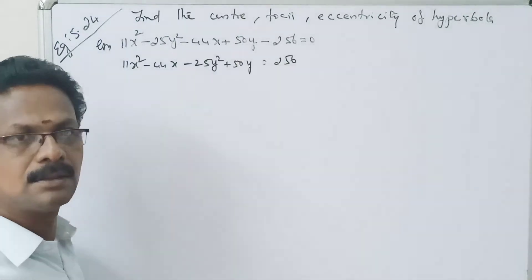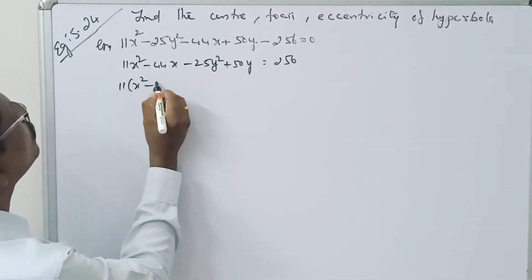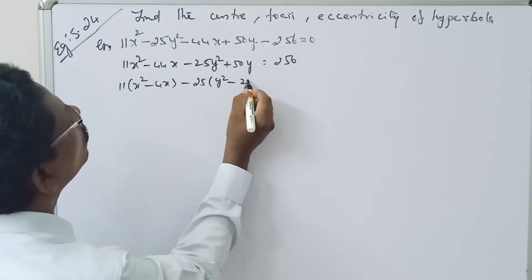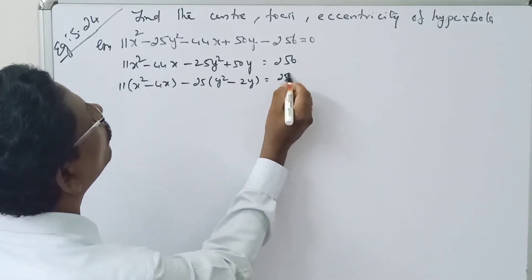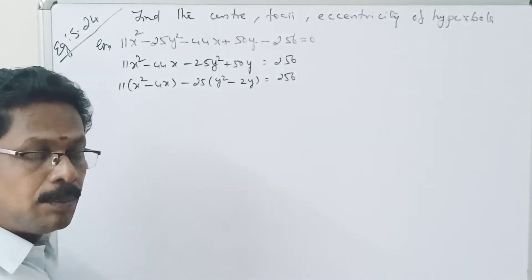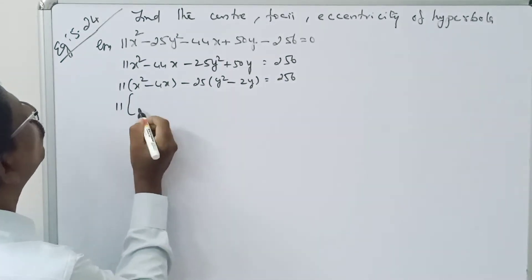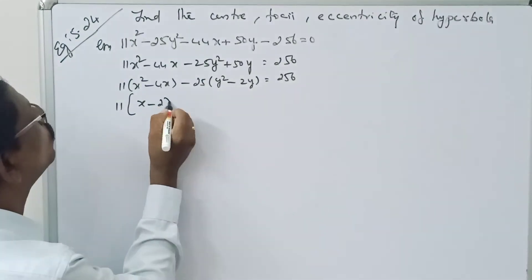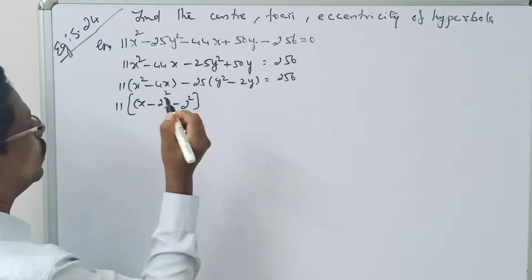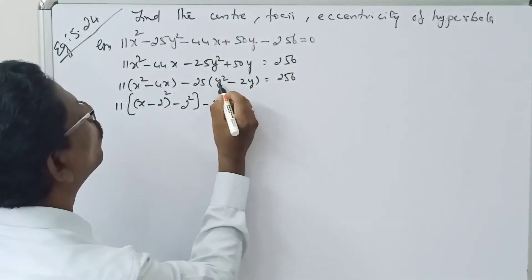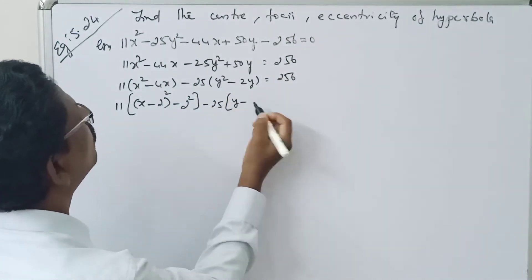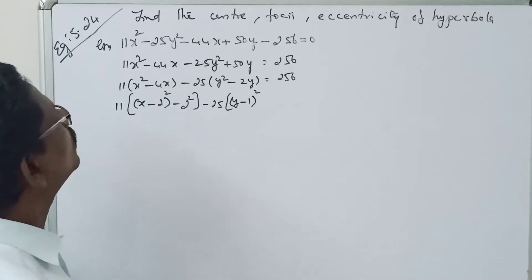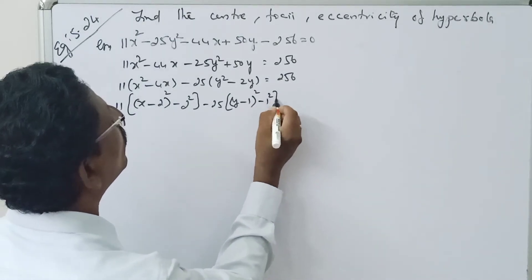Take 11 common from the x terms and -25 common from the y terms: 11(x² - 4x) - 25(y² - 2y) = 256. Now complete the square. Take x minus half the coefficient of x, that is (x - 2)², minus 2². Then for y: (y - 1)² minus 1².